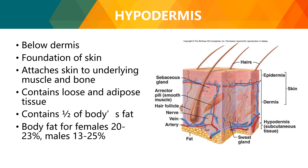Next is your hypodermis, found below the dermis. It is the foundation of the skin, attaching skin to the underlying muscle and bone. It contains loose and adipose tissue and about half of the body's fat. Body fat for females is around 20 to 23 percent, and for males around 13 to 25 percent. The hypodermis is not considered a layer of the skin.